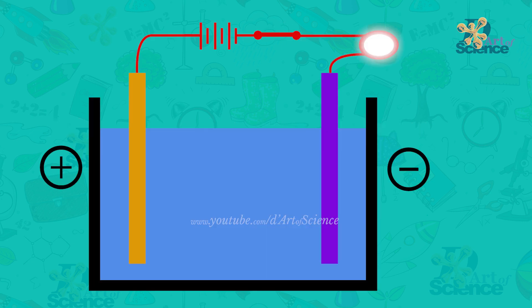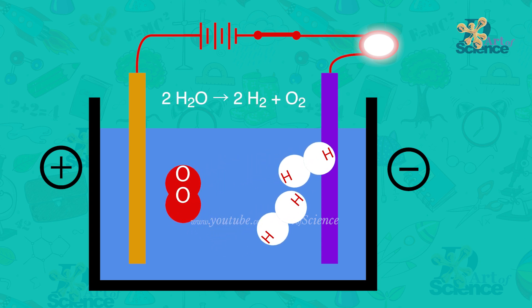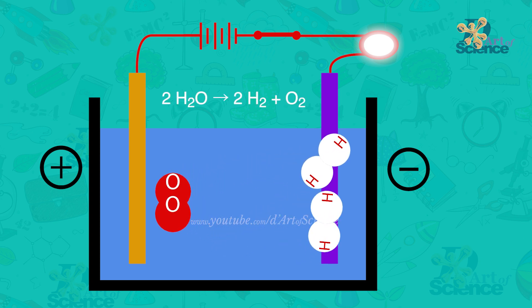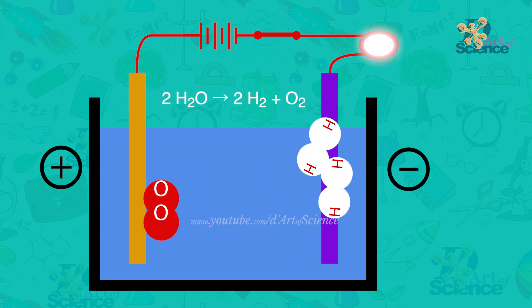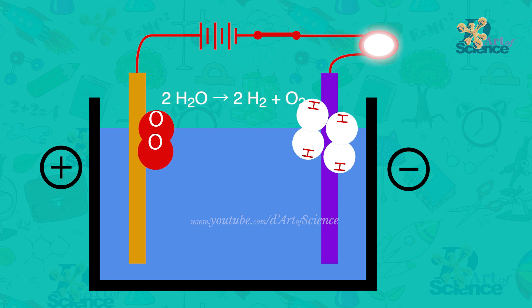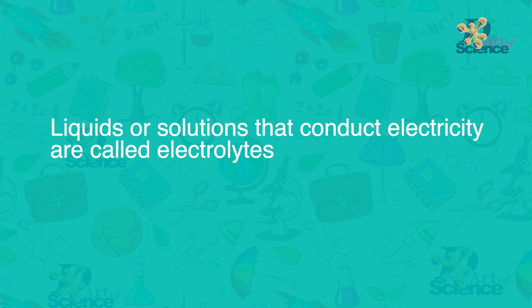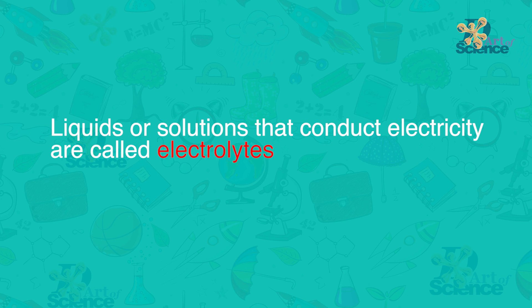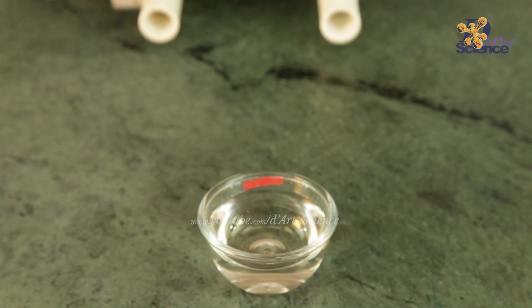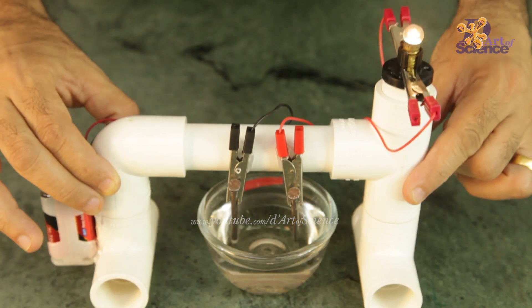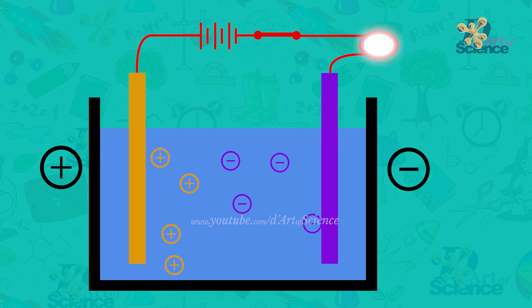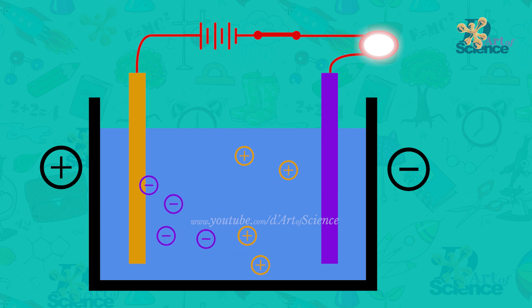For example, when electricity passes through water or H2O, a chemical change takes place where the water decomposes into hydrogen and oxygen gases. Liquids or solutions that conduct electricity are called electrolytes. Therefore, a strong electrolyte means that it's a good conductor of electricity, and that's because it has more ions.